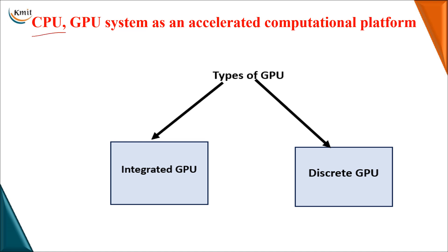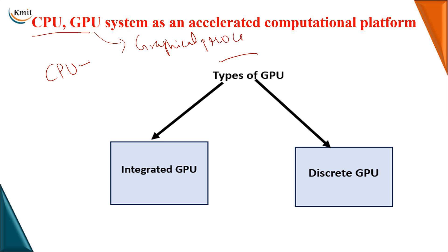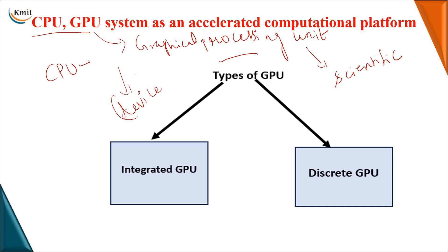As we all know, the CPU is the main computing part of a system which does all your processing. Additional to the CPU, we have a GPU, which stands for Graphical Processing Unit. The main intention of developing this processing unit was to work on image-related applications. Later on, we started using it even for scientific applications where you have a huge amount of calculations to be done. Basically, GPU is a device that acts in support of your CPU, and it will not work alone.